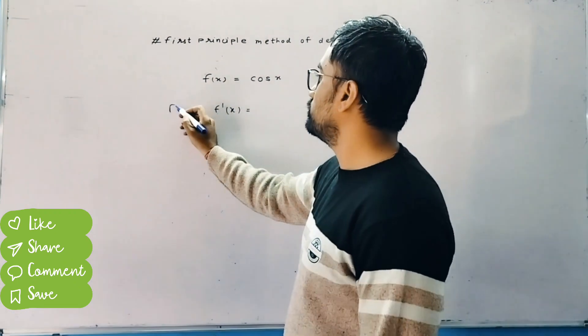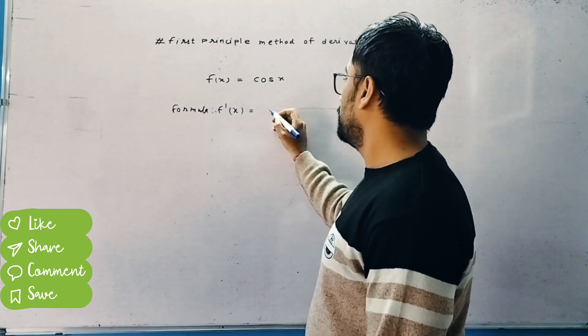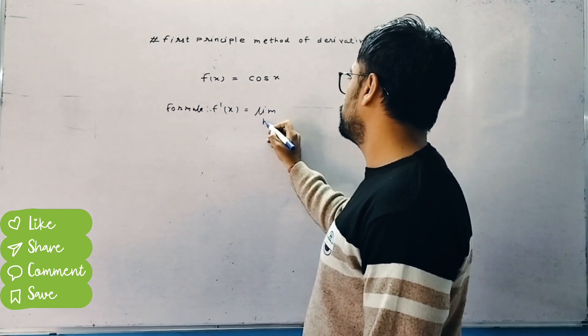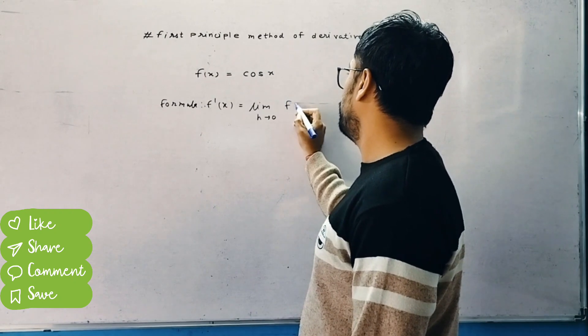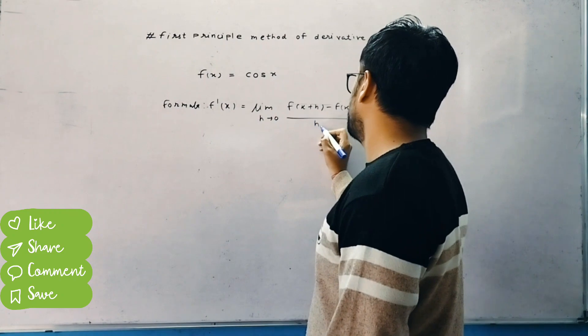What is the simple formula? Limit h tends to 0, f of x plus h minus f of x upon h.